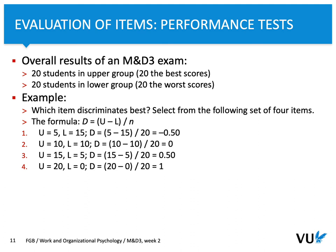As you can see in this example, items 3 and 4 discriminate between both groups well. In the third case, the majority from the upper group got it right and the minority from the lower group got it right. In the fourth case, all of the upper group got it right and none from the lower — indicating perfect discrimination. Item 3 discriminates properly, as you can conclude.